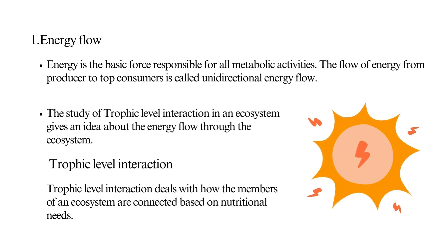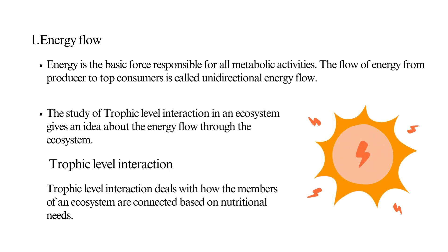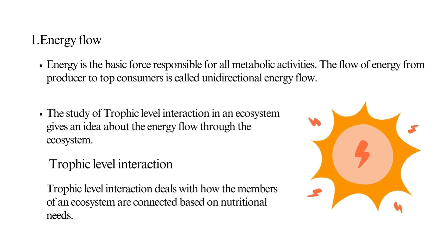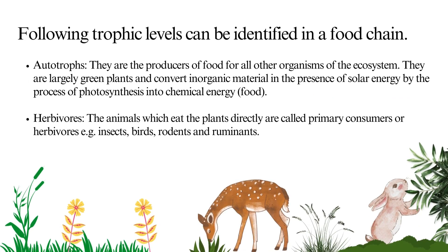Energy flow: energy is the basic force responsible for all metabolic activities. The flow of energy from producer to top consumers is called unidirectional energy flow. The study of trophic level interaction in an ecosystem gives an idea about the energy flow through the ecosystem. Trophic level interaction deals with how the members of an ecosystem are connected based on nutritional needs.